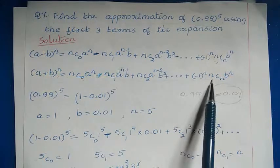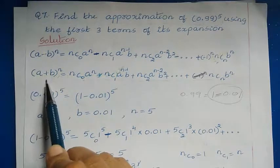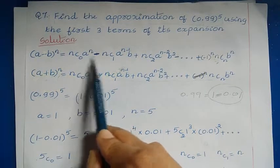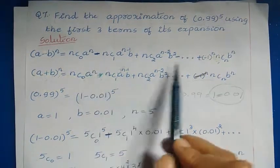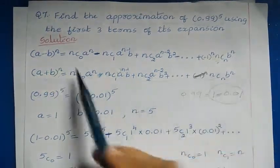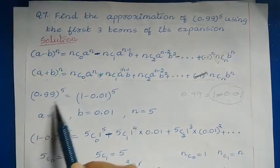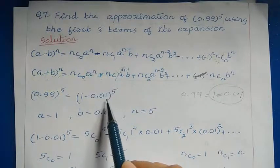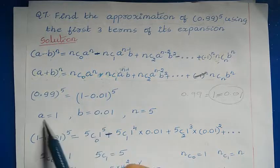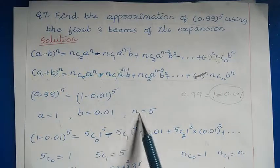The binomial theorem states (a + b)ⁿ for a positive sign. If the sign is negative, we make changes in the signs: the second term is negative, the fourth term is negative, and the last term's sign depends on n. Now compare (1 − 0.01)⁵ with (a − b)ⁿ: here a = 1, b = 0.01, and n = 5.